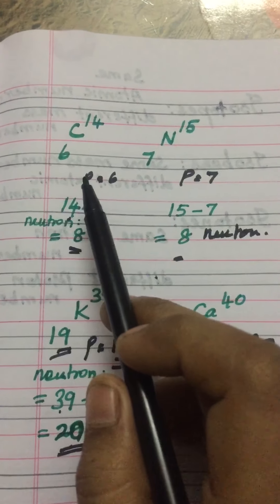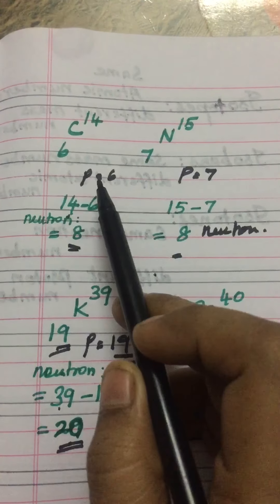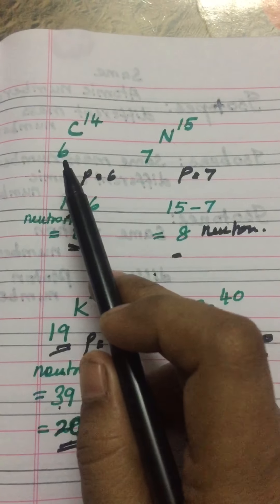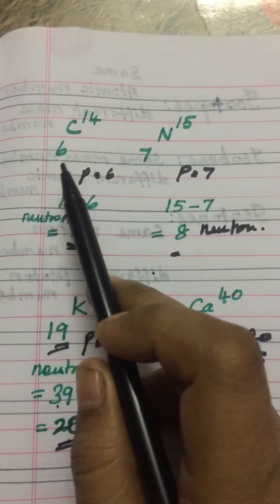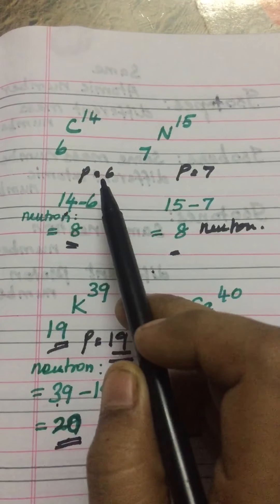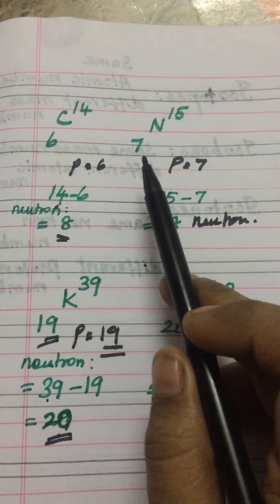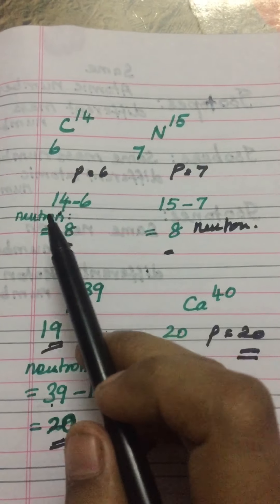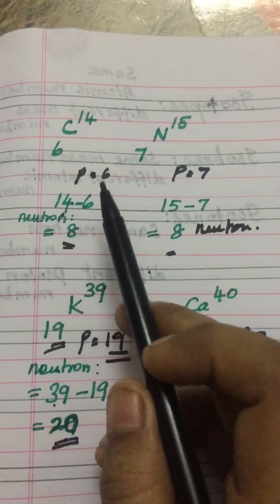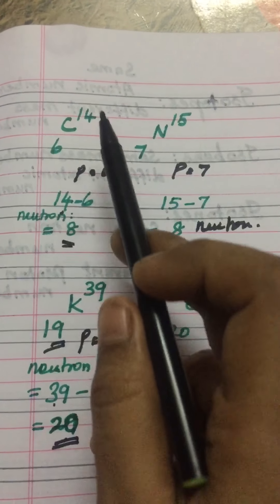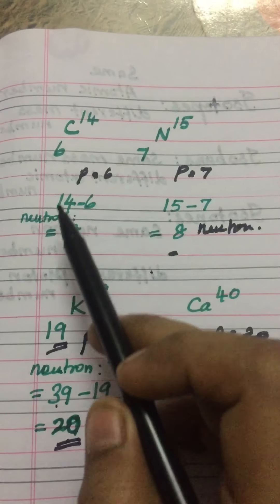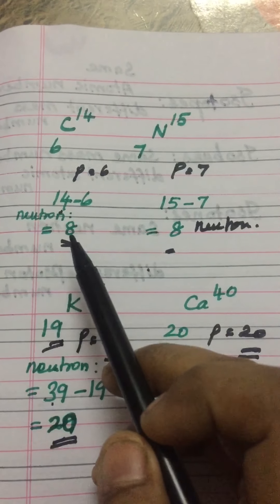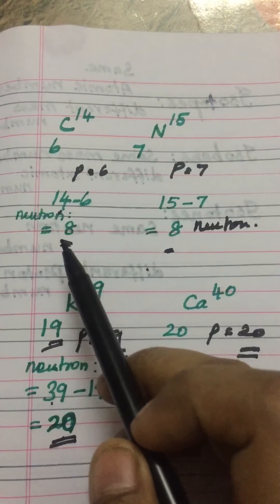Now we have to find out the proton value. Carbon proton value is 6 because the atomic number is 6. So atomic number means proton or electron value, so the proton value is 6. Nitrogen proton value is 7. Now subtract the proton value from the mass number: 14 minus 6, so the neutron value for carbon is 8.